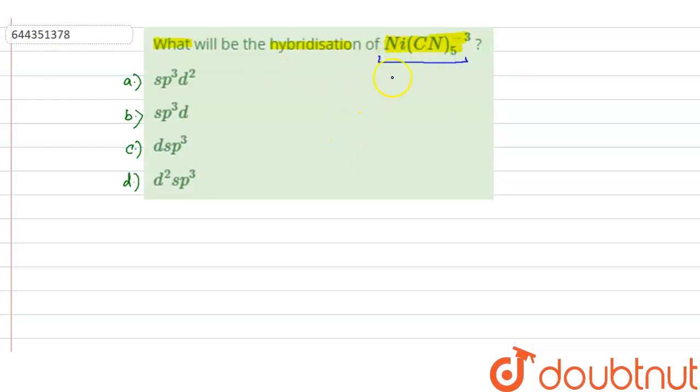In this complex, nickel is the central atom, so first of all we will find out the oxidation state of nickel. We have Ni(CN)5^3-. Let the oxidation state of nickel be x. We have five cyanide ligands and cyanide ligand has minus one charge, so we will be having five times minus one, minus five. It will be equal to minus three, which is the overall charge on the complex. From here we get x equals minus three plus five, which equals plus two.